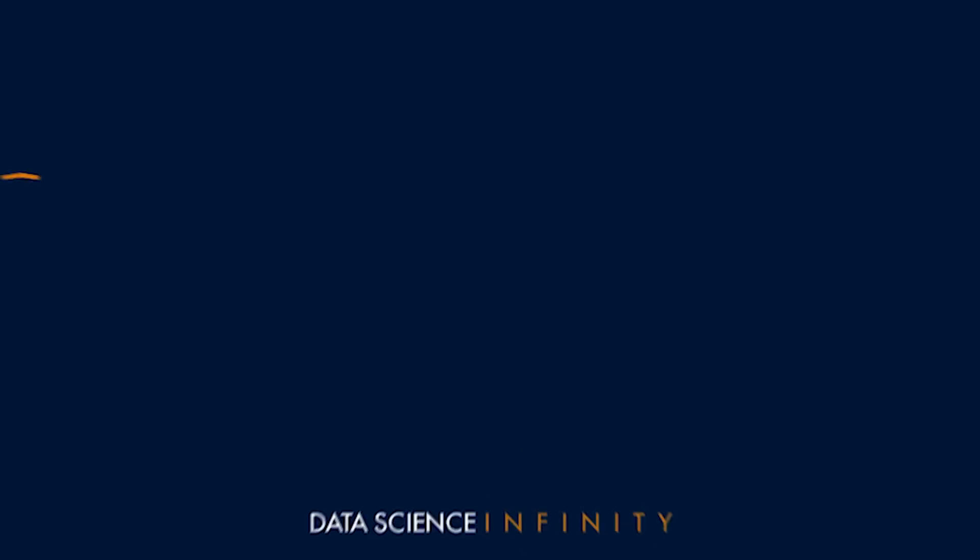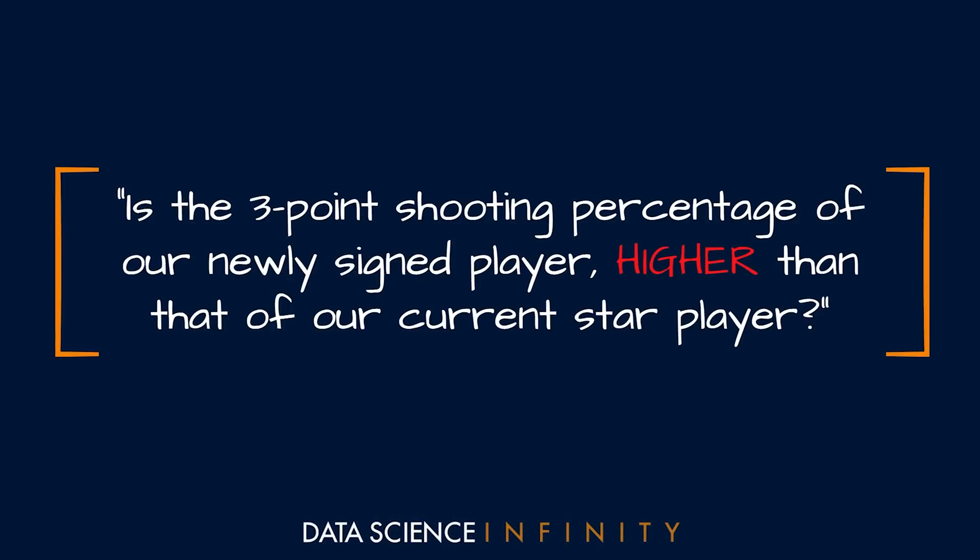In the next video we're going to look at a slightly different type of test that will answer our final question as coach, which is: is the three-point shooting percentage of our newly signed player higher than that of our current star player? For this we'll be moving away from the t-test and instead utilizing what is known as a chi-square test for independence that will work well for the type of data we have, which is proportional data, specifically the three-point shooting percentages of two players on the team. The chi-square test, while sounding pretty fancy, is actually really intuitive, so I can't wait to run through it with you. I will see you in the next video.